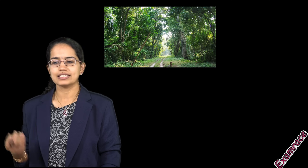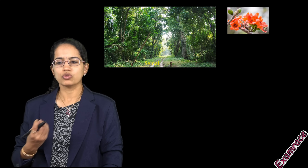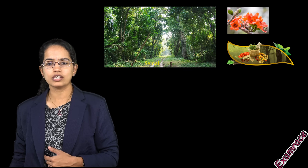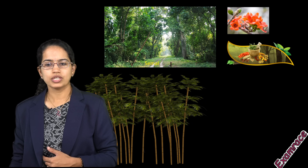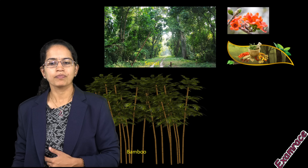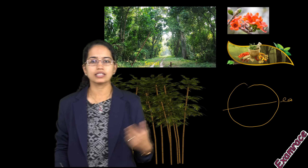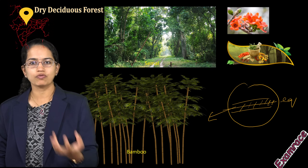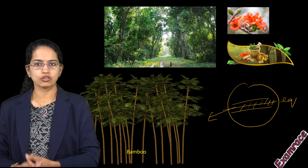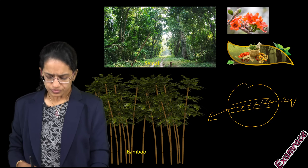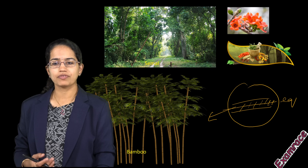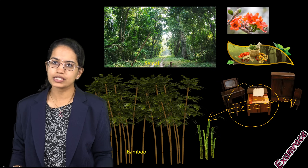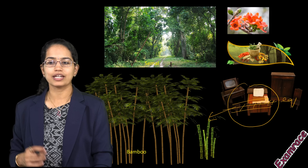Some common products we get from forests include matchsticks, paper, boxes, fuels, and furniture. On the globe, the region close to the equator is the tropical region; vegetation in areas like the Amazon basin in South America or the Congo basin in Africa would be very different from a deciduous forest in India. With climate variations, different types of trees are found, and correspondingly different species of animals and wildlife are seen in those regions.